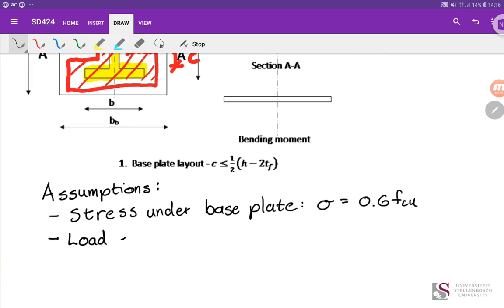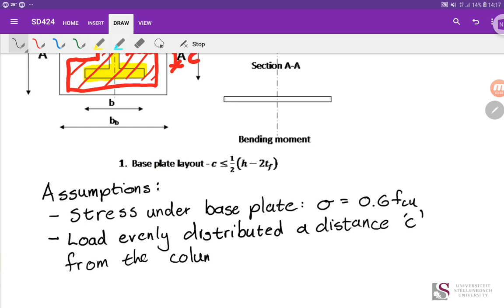And then load evenly distributed, evenly distributed a distance C from the column, C from the column edge. And the way we're deriving it now, it doesn't actually matter what baseplate, well what column size and shape you use. The methodology will apply to anything. If you're using resources such as the South African Institute of Steel Construction Green Book, they are pre-done equations which make it quicker to get to the final capacity but they only apply to specific shapes. We're just doing a generic calculation method for any shape, any size, doesn't matter what.